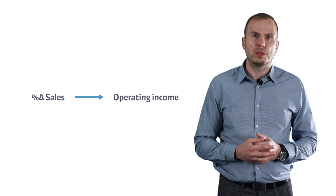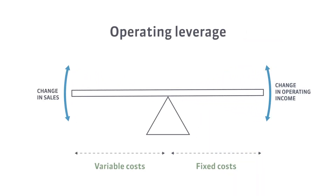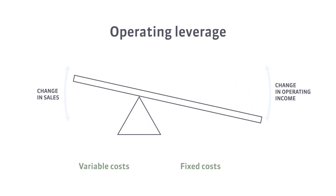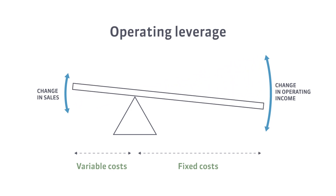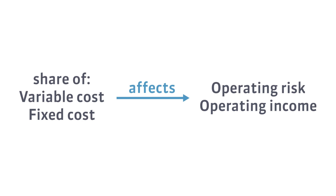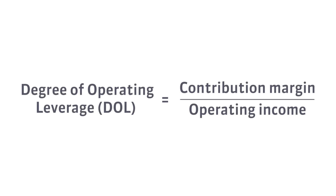The degree of operating leverage tells you how much operating income will change in response to a change in sales. The use of operating leverage is possible thanks to a combination of fixed and variable costs — a higher share of fixed costs means higher operating leverage. A greater operating leverage means a greater change in operating income as sales volume changes. Therefore, the share of fixed and variable costs affects operating risk and operating income. The degree of operating leverage is measured by dividing contribution margin by operating income.